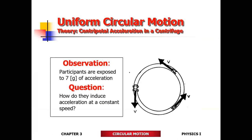The question is: how do they induce acceleration at a constant speed? This was a test question previously. Most of you said it's because the person is changing direction, and changing direction is acceleration — because when direction changes, it changes velocity, and changing velocity is acceleration. Those who said just 'direction changes' got one out of two points. Those who added that changing direction changes velocity and changing velocity is acceleration got one and a half out of two. No one got full credit because the justification wasn't complete.